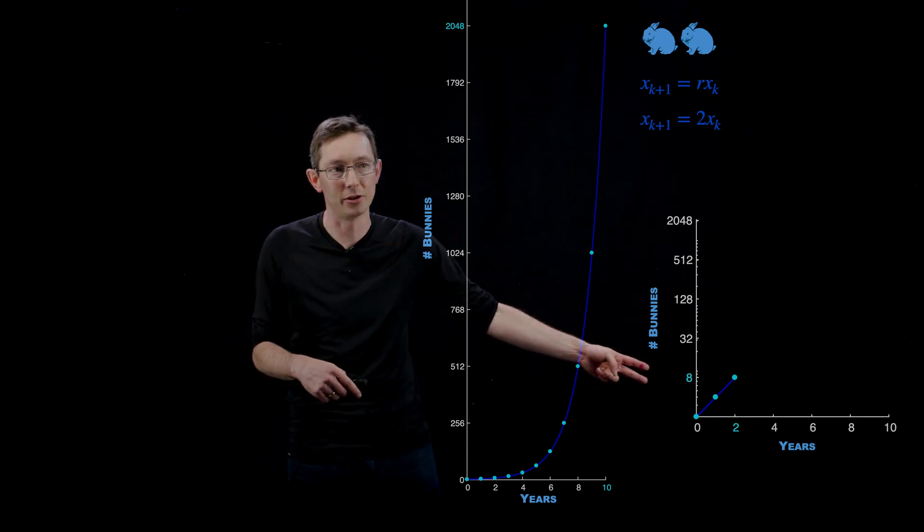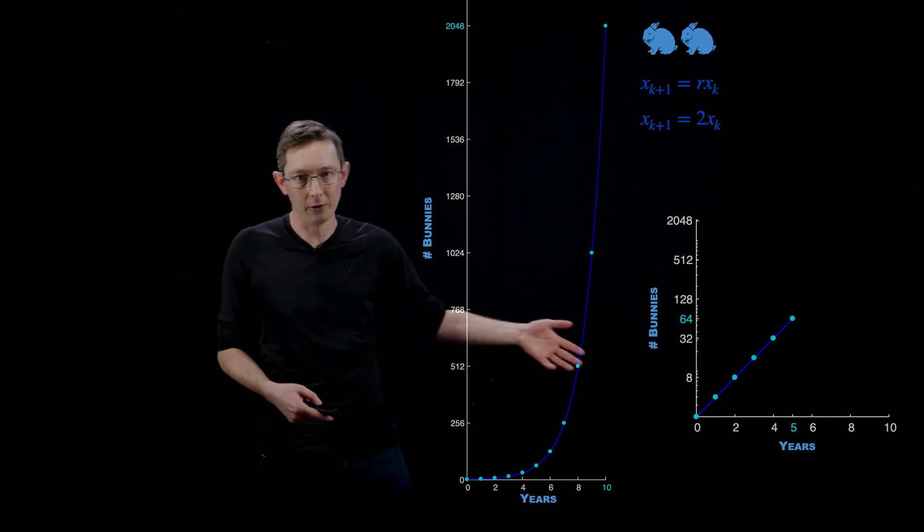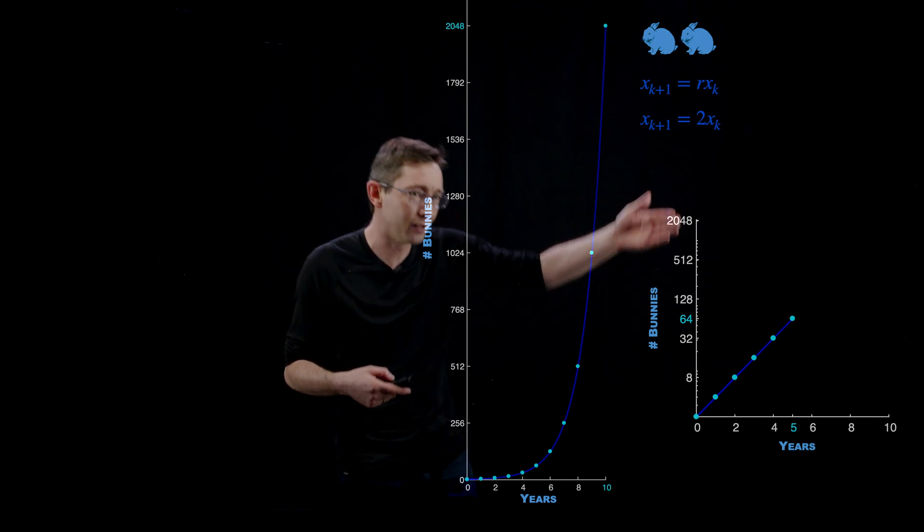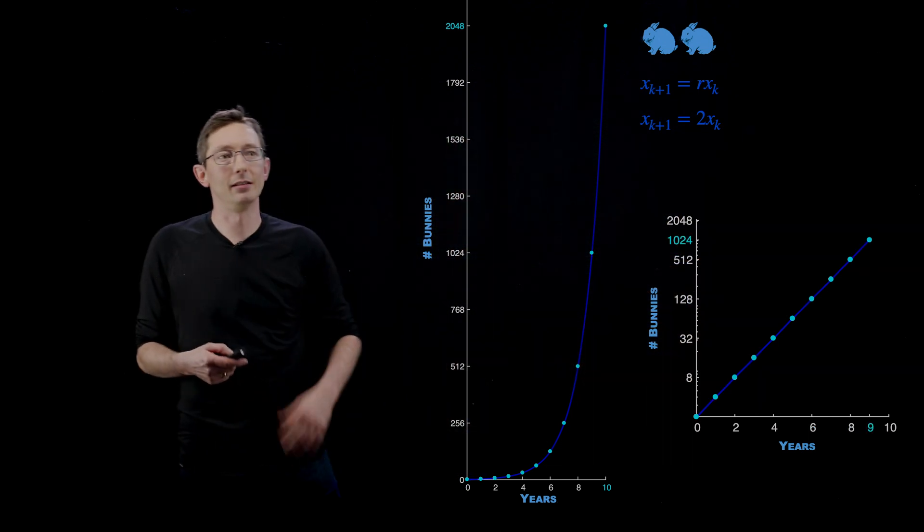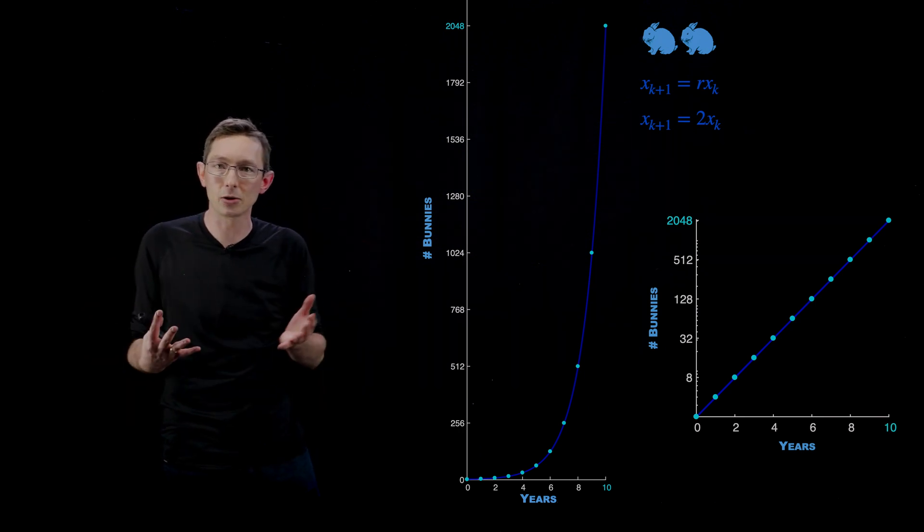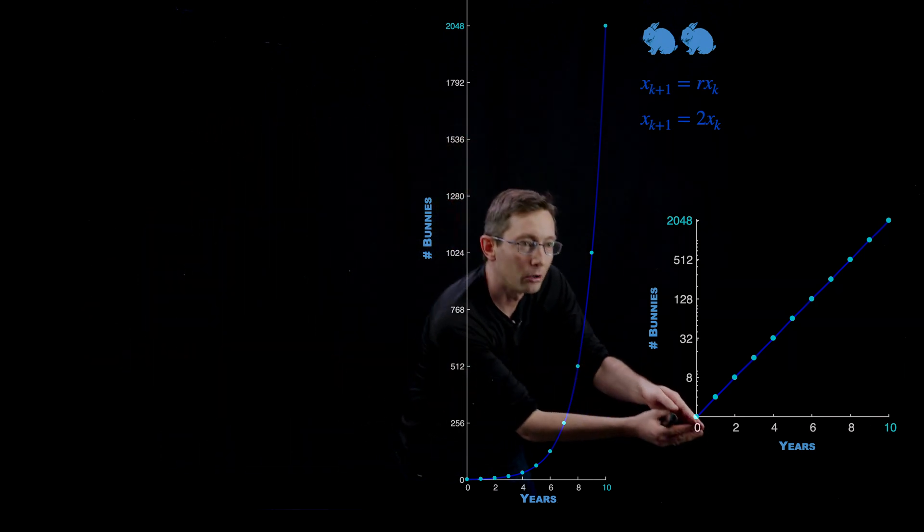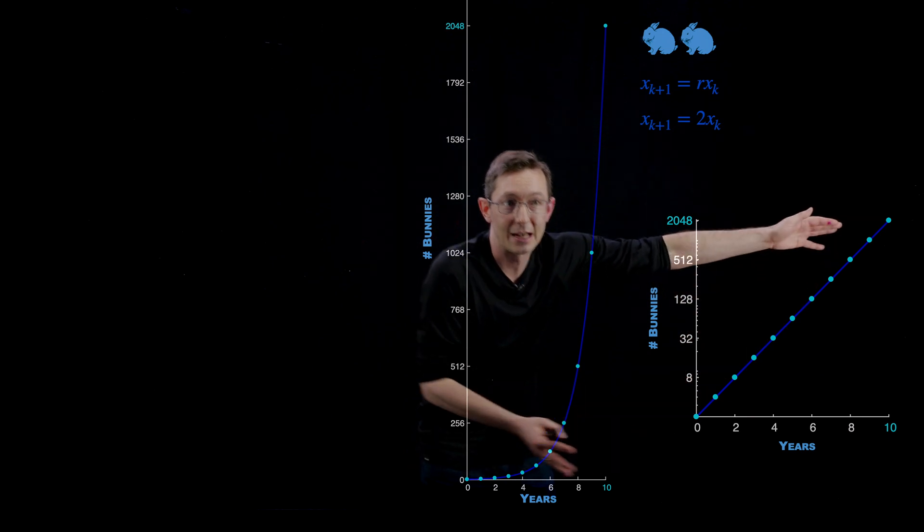And so if you take that same population growth, where after one year I have 4 bunnies, after 2 years I have 8, and so on and so forth, you see that on these log coordinates, your exponential growth turns into this nice straight line. And this is much easier to visualize and to see all of the scales of growth over time in these log coordinates.